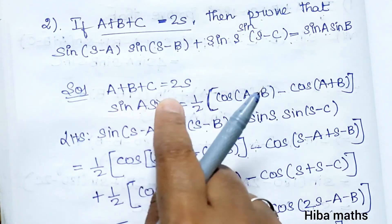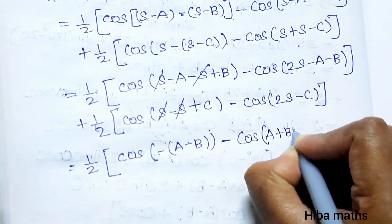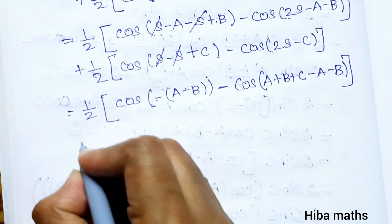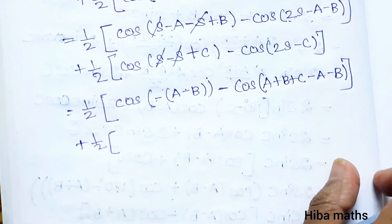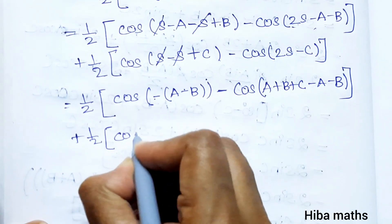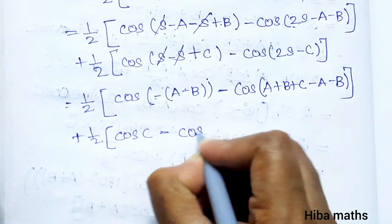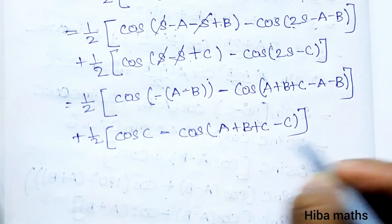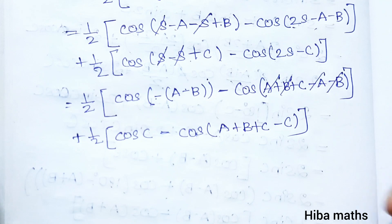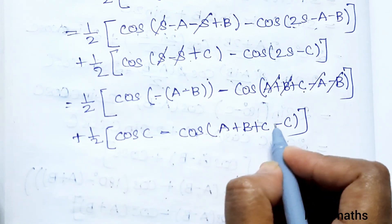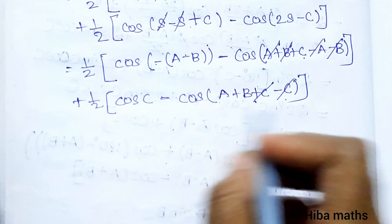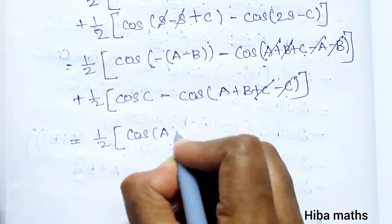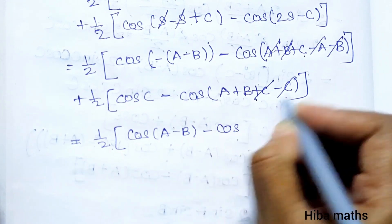Now 2s is equal to a plus b plus c, so we substitute: 2s minus a minus b gives a plus b plus c minus a minus b, which equals c. Similarly the next term: 1/2 cos(c) minus cos(2s), substituting 2s as a plus b plus c minus a minus b. Simplifying: plus a minus a cancel, plus b minus b cancel, leaving c.